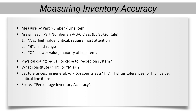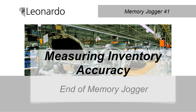When you compare a physical count to the computer record, a hit means that the physical count is at or inside the range. A miss is when the physical count quantity is outside of the range. Count up the number of hits compared to the total number of items counted, and you have your inventory accuracy percent. This concludes this Memory Jogger on the subject of measuring inventory accuracy.